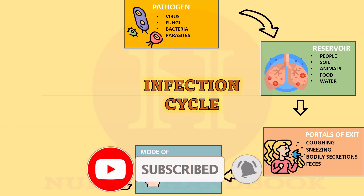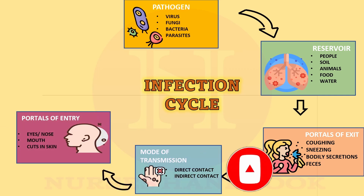The fifth element is the portal of entry — that is, infectious agents getting into the body. Pathogens often enter the body of the host through the same route they exited the reservoir. For example, airborne pathogens from one person's sneeze can enter through the nose of another person.